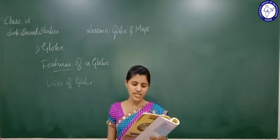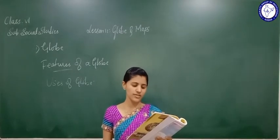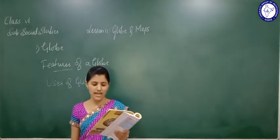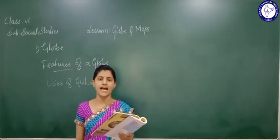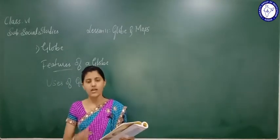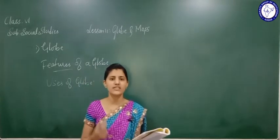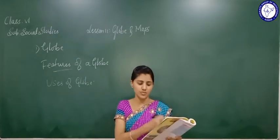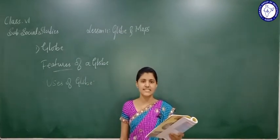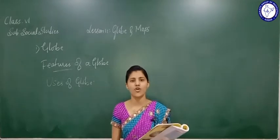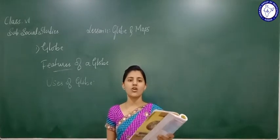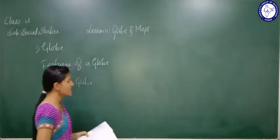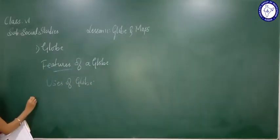The globe gives general information about geographical features such as mountains, plateaus, plains, deserts, islands, rivers, etc. With different symbols, we can denote these features on the globe. This is all about the uses of the globe. Now let us study about maps.